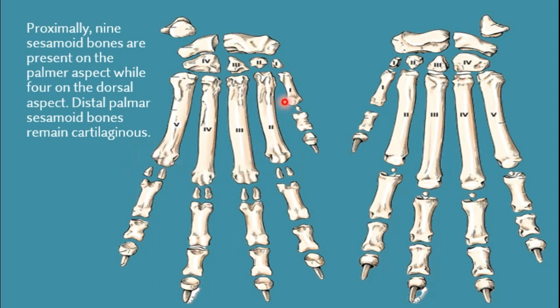Between the first phalanx and first metacarpal bone only one sesamoid bone is present at the palmar aspect. Between the second, third, fourth, and fifth phalanx and their corresponding metacarpal bones, two sesamoid bones are present between each metacarpal bone and each phalanx. So two sesamoid bones are present at the metacarpophalangeal joint of the main digits, while on the first digit a single flattened sesamoid bone is present. These are the proximal palmar sesamoid bones.